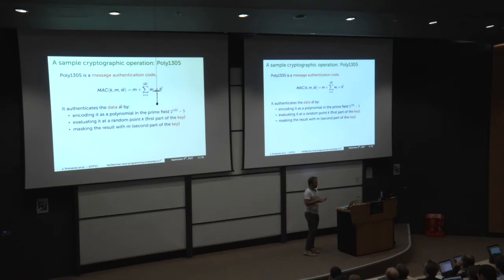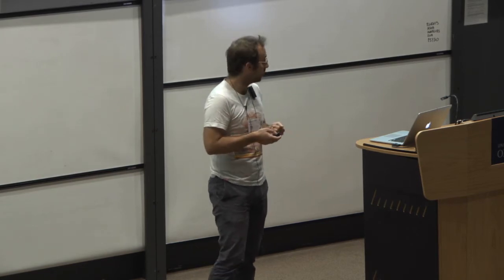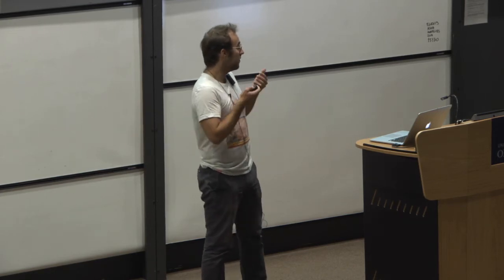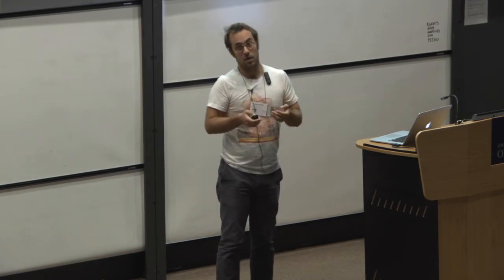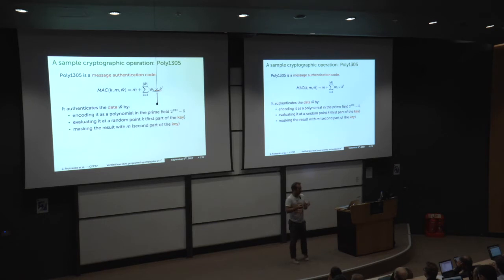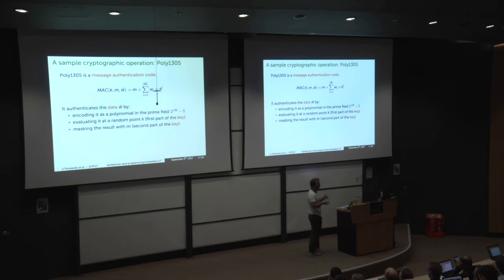The way that it works involves a lot of math. It operates in a finite field and evaluates a polynomial in the finite field of characteristic 2 to the 130th minus 5, which is a prime number. You evaluate the polynomial using the key and do an addition with another part of the key, using the words of the message — the W_i — as the coefficients of your polynomial.